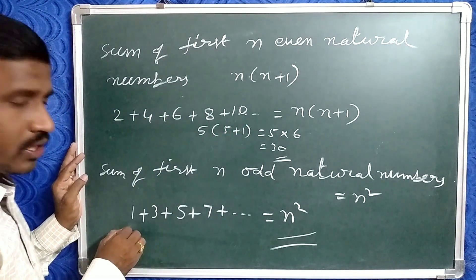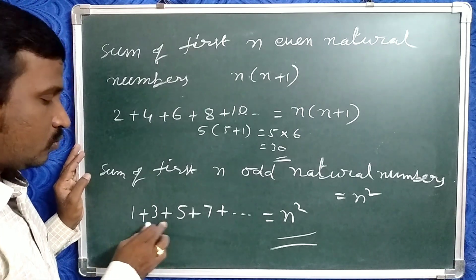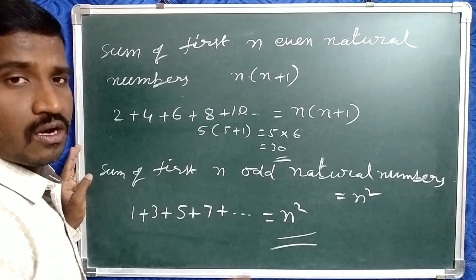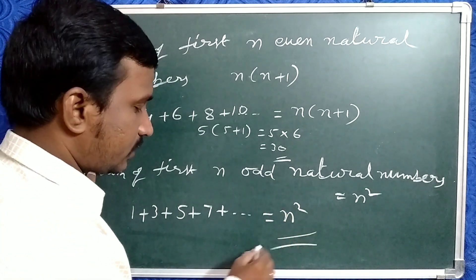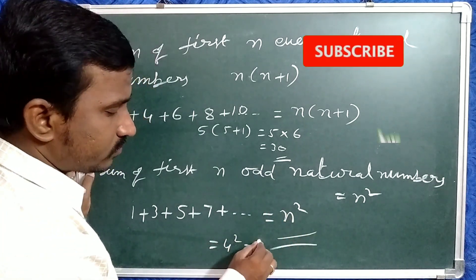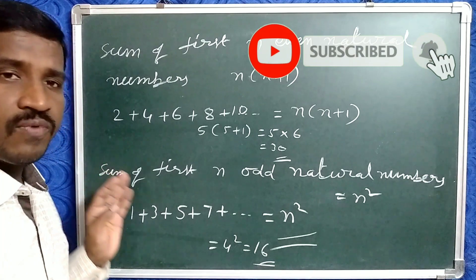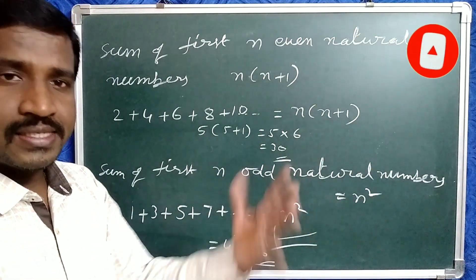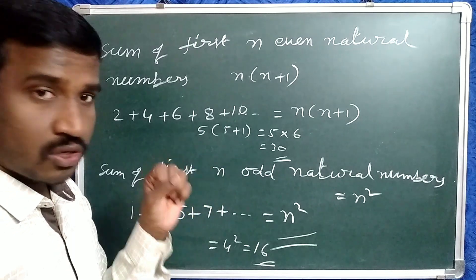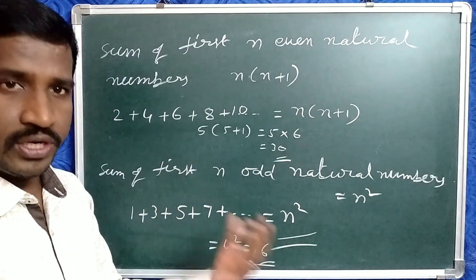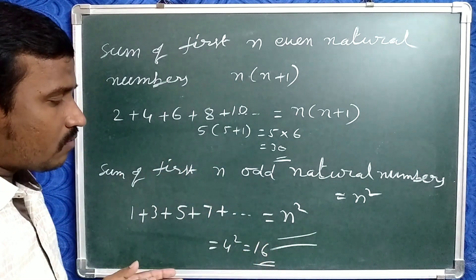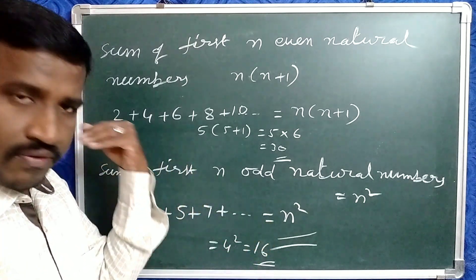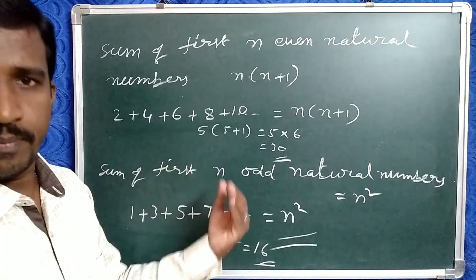Suppose given: sum of first 4 odd natural numbers. The formula for sum of first n odd natural numbers is n squared. So with n=4: 4 squared equals 16. Sum of first 7 odd numbers: 7 squared equals 49. Sum of first 5 odd natural numbers: 5 squared equals 25. So sum of odd numbers equals n squared, and sum of even numbers equals n(n+1).